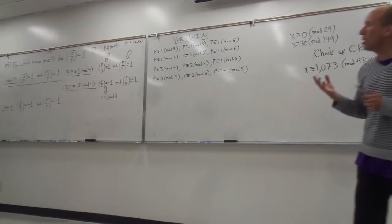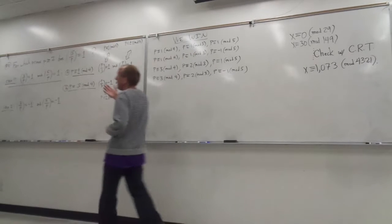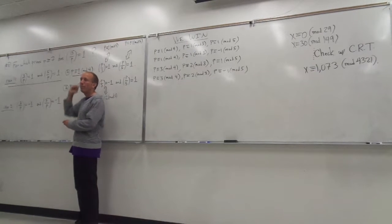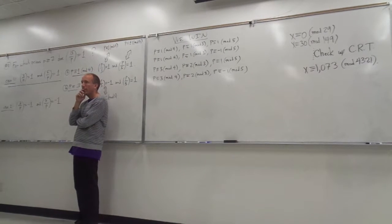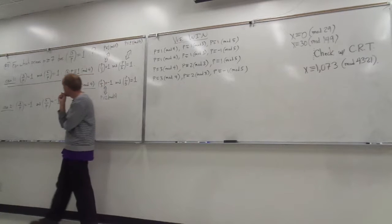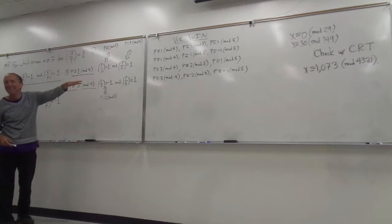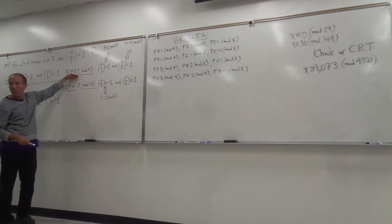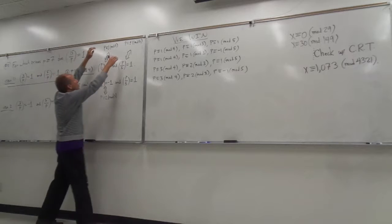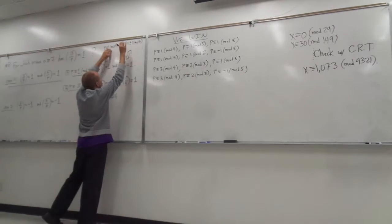Four ways that we get the Legendre symbol of 15 with respect to p to be plus 1. That's in this case, for both of these to be plus 1. Both of these will be plus 1 in any of those four cases, right? Either p is congruent to 1 mod 4, and then we have one of these two. We have this with this, or this with the other one, right?